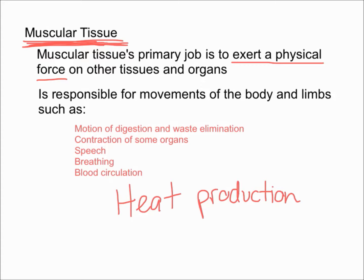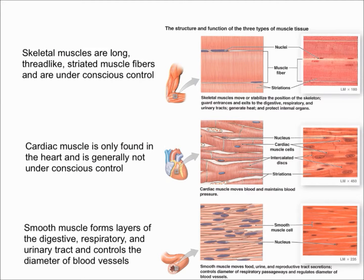There are actually three different types of muscle tissue. The three types are skeletal muscles, cardiac muscles, and smooth muscles.